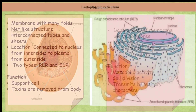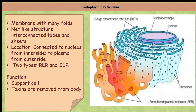Our next cell organelle is the endoplasmic reticulum. It is a membrane with many folds — a net-like structure consisting of interconnected small tubes and sheets filled with fluid. Endoplasmic reticulum is connected to the nucleus from the inner side and to the plasma membrane from the outer side. There are two types: rough endoplasmic reticulum and smooth endoplasmic reticulum. Its functions are to act as a framework supporting the cell, and to make toxins that have entered the body through food, air, or water soluble so they can be flushed out.